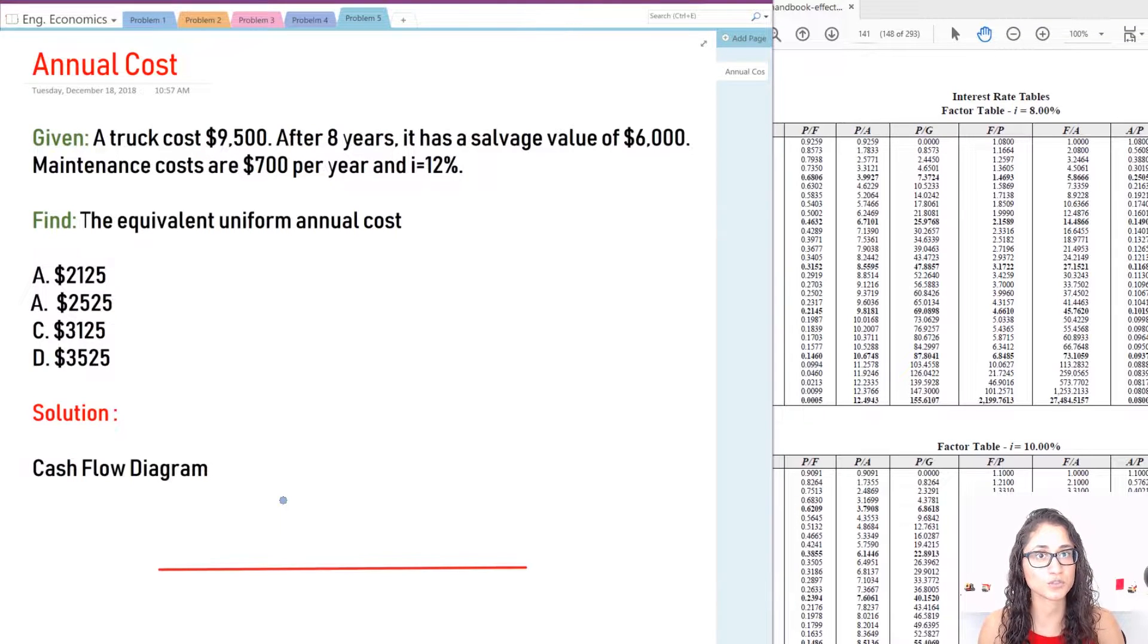So the first thing we're going to do here is a cash flow diagram. Actually, you know what? Let's first determine what's an outflow and what's the inflow. So this is going to be an outflow, and then this is an inflow, right? That's going to be positive. This is an inflow, and this is an outflow because you're spending $700 every year.